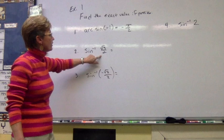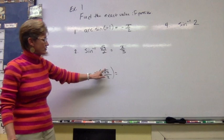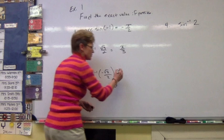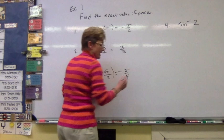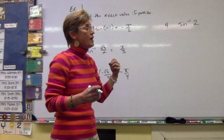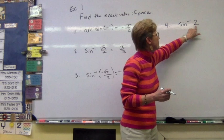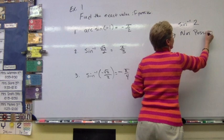For number three, we have negative square root of two over two. Again, don't focus on the negative — the angle will just be negative once I find the first quadrant angle. The first quadrant angle where sine equals square root of two over two is pi over four. For number four, sine inverse of two: two is not a numerical value for sine on our special angle sheet, and by definition this value must be between negative one and one. Since it's not, this is not possible.